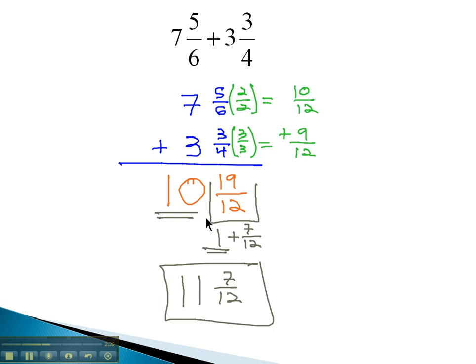Again, the way we got that is we took our fraction that was an improper fraction and found out what the mixed number equivalent was by dividing. 12 goes into 19 once, leaves a remainder of 7. That corresponds with the mixed number 1 and 7 twelfths. Then we combine the whole numbers together, 10 and 1, to give us 11 and 7 twelfths.